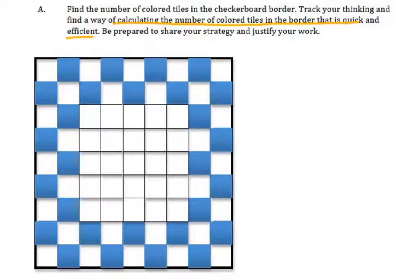Plus, you need to be able to connect your expression or your strategy with the picture. So using the picture, you should be able to define what each part of your method you use to calculate the number of colored tiles is. You're going to have to be able to explain what you're doing. So what you need to do is start this off on your own first. Have your teacher give you about five minutes or so.